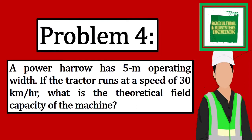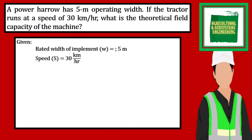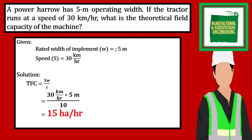Next, we proceed to sample problem number 4. A power harrow has a 5-meter operating width. If the tractor runs at a speed of 30 kilometers per hour, what is the theoretical field capacity of the machine? The given in the problem are the rated width of implement of 5 meters and the speed of 30 kilometers per hour. Theoretical field capacity is equal to the speed of 30 kilometers per hour times the width of 5 meters, all over 10. We simply solve, giving us a final answer of 15 hectares per hour. That is now the solution to problem number 4.